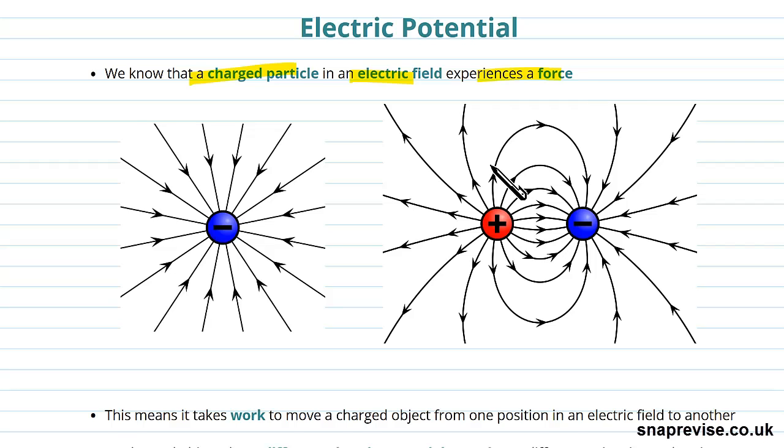But we see how we diagram that with these field lines as well. The idea is that these arrows show the direction that a positive test charge would follow in this field. So for this negative charge, they're towards the negative charge because a positive charge would be attracted towards this negative charge and will move towards it.